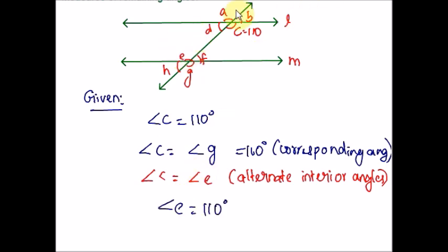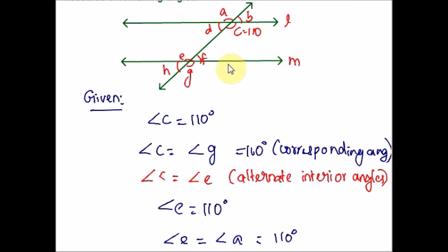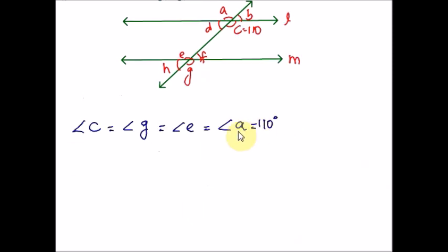What is the relationship between angle E and angle A? Both are corresponding angles. Please check the position of angle A and E — they are in the same position for lines L and M, so they are corresponding angles. Corresponding angles are congruent, meaning equal. So angle A is also equal to 110 degrees. So far we have angle C, G, E, and A all equal to 110 degrees.